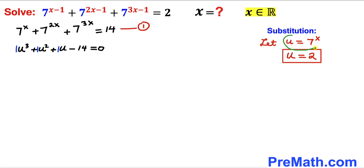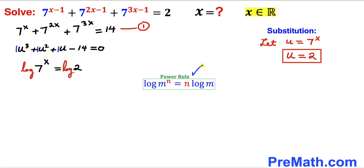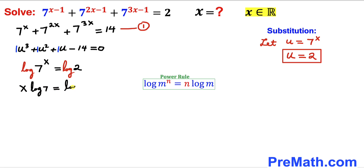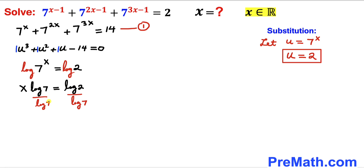Recalling our substitution u = 7^x and u = 2, we can write 7^x = 2. Now I'm going to take the common log on both sides. Using the power rule of logarithms — log(m^n) = n·log(m) — we drag x to the front: x·log(7) = log(2). Dividing both sides by log(7) to isolate x.